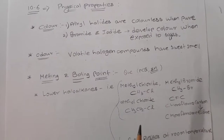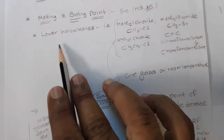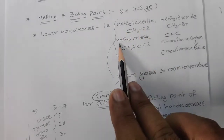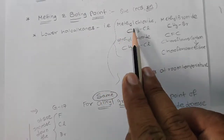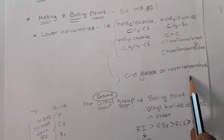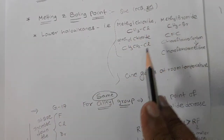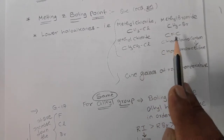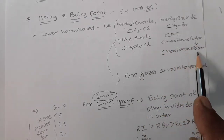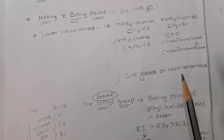When we talk about melting point and boiling point, lower haloalkanes — meaning those with fewer carbons, like methyl or ethyl — are gases at room temperature. Examples include methyl chloride, methyl bromide, ethyl chloride, and CFCs — chlorofluorocarbons or chlorofluoromethane. These are gases at room temperature.